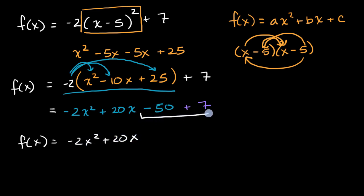And then if I take negative 50 plus seven, it's negative 43, or seven minus 50 is negative 43. And we're done. We have rewritten the function in standard form.